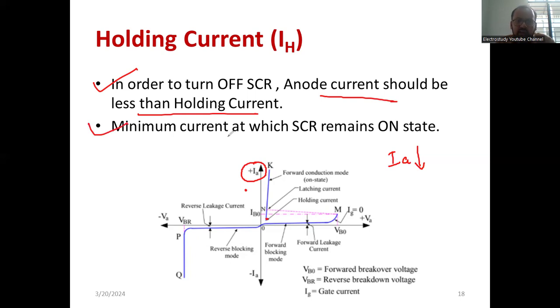The minimum current at which SCR remains off stage is known as holding current. Holding current is related to turn off process.